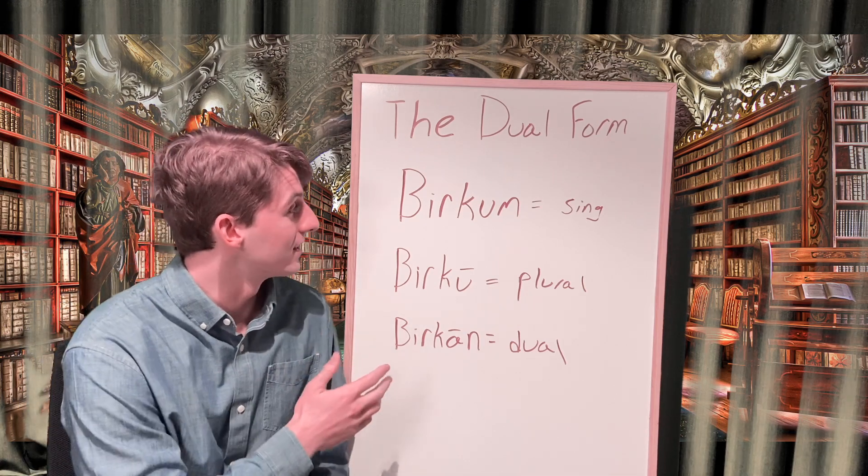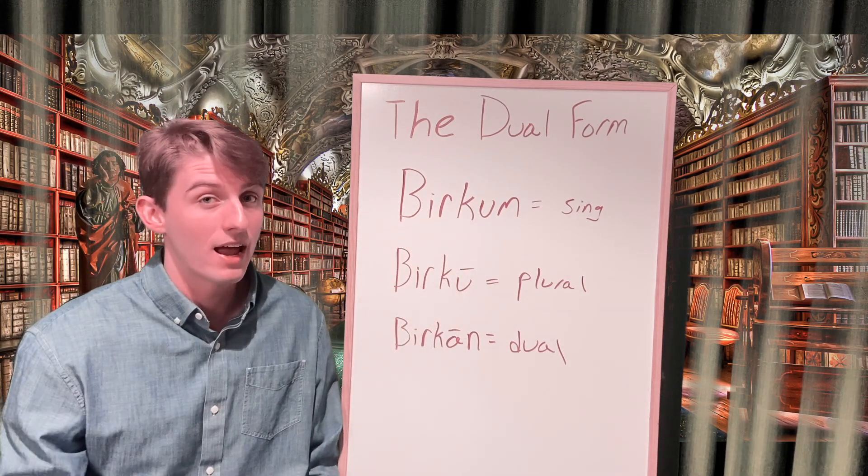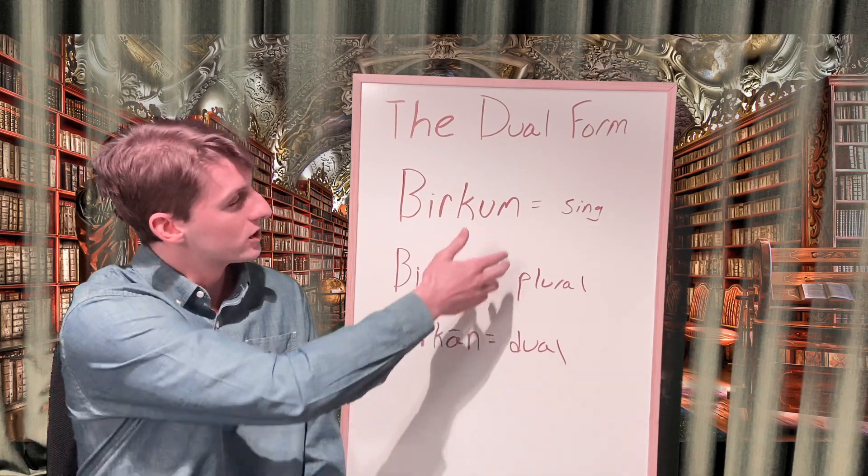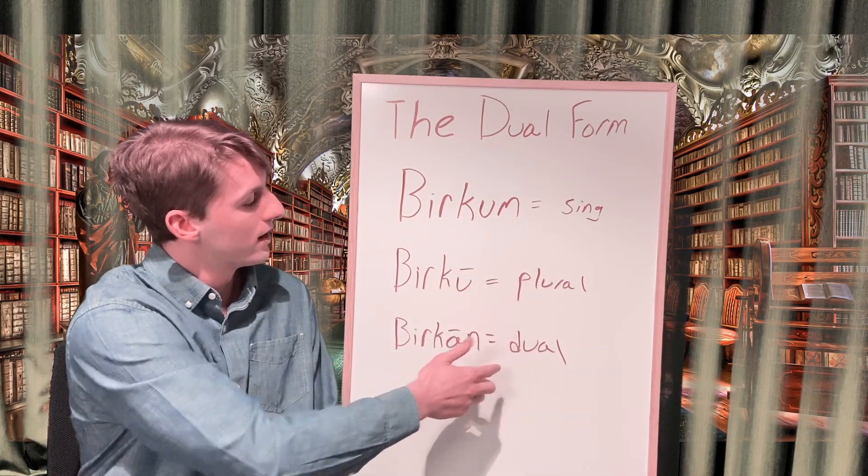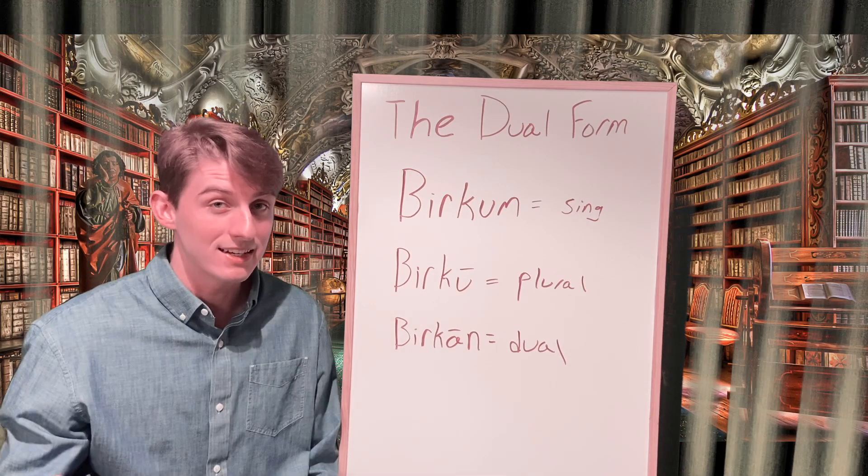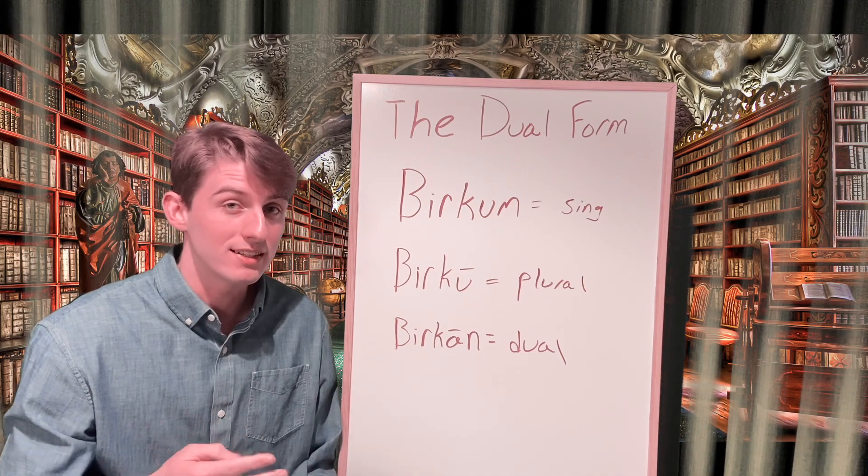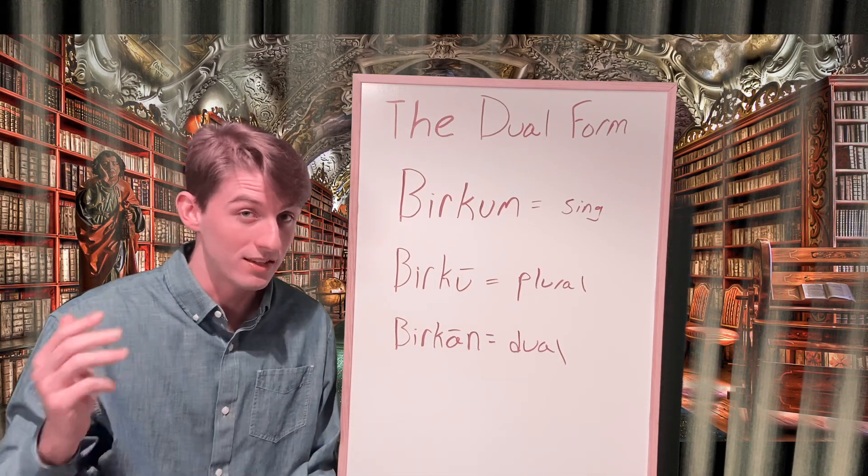Here I have an example using the word berkum, which means knee. I put the nominative case on each of the stems to show that just like the singular and the plural, the dual form is also going to take its case ending by just adding it to the stem. The dual form is going to have three different case endings for the nominative, the accusative, and the genitive.